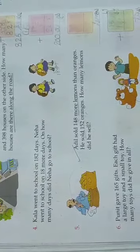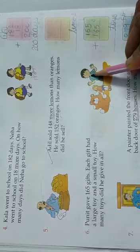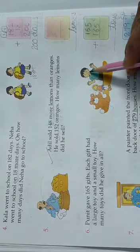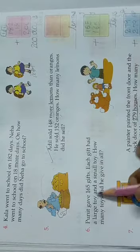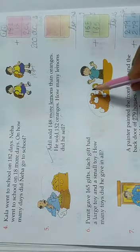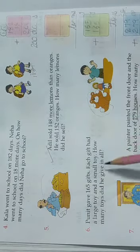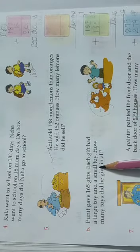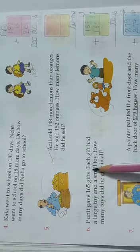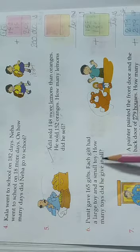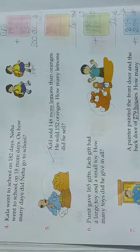Puneet gave 165 gifts. See here we can see a boy named Puneet. He gave 165 gifts to his friends. Each gift had a large toy and a small toy. See, this is a large toy and this is a small doll. This is a large teddy bear and small doll. It might be his birthday. He gave return gifts to his friends - one gift which has one big toy and one small toy.